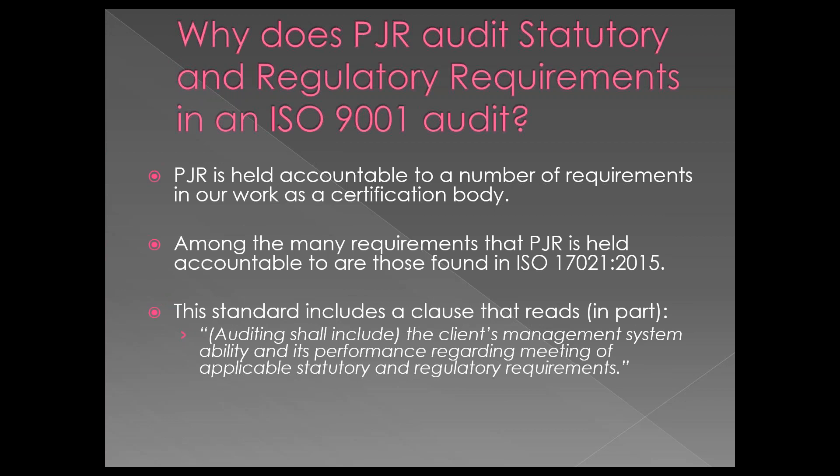How does all of this add up to an ISO 9001 audit, and why is PJR specifically inquiring about these things? We are held accountable to a number of requirements in our work as a certification body. Perhaps the most important is ISO 17021-1, which you can think of as ISO 9001 for a certification body. That standard includes a clause that reads: 'Auditing shall include the client's management system ability and performance regarding the meeting of applicable statutory and regulatory requirements.' In short, we are compelled to look at these things by the folks we answer to.